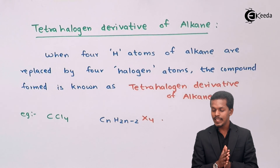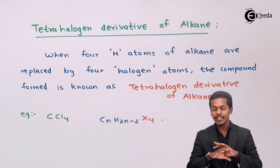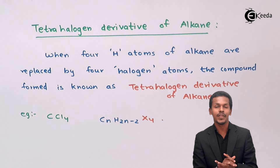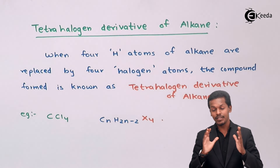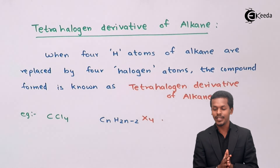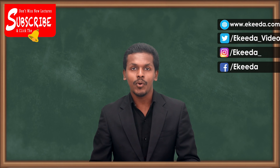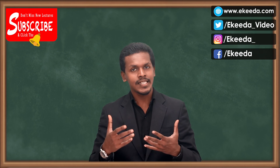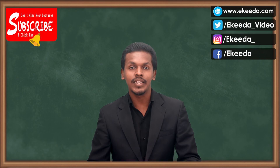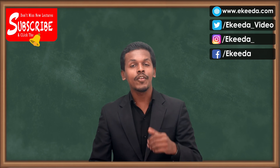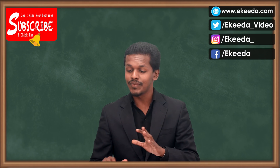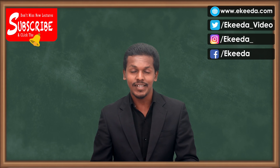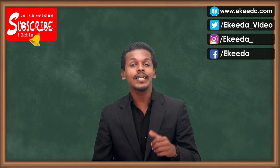So this is the overall classification of the halogen derivatives of alkane that we have discussed. There are further things we will talk about in the next lecture. Thank you friends for watching this video. I hope you understood this video clearly — please share it with your friends.